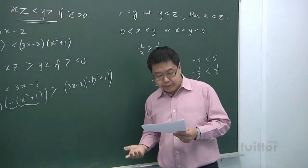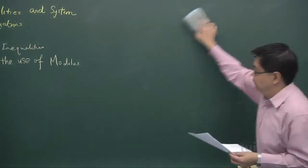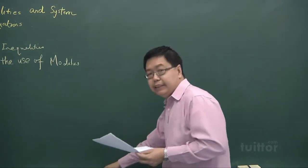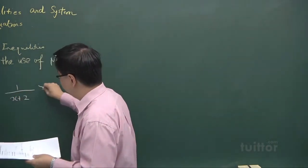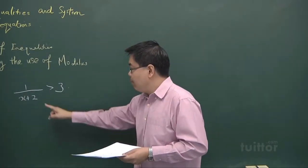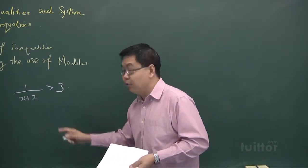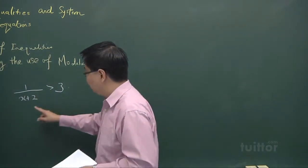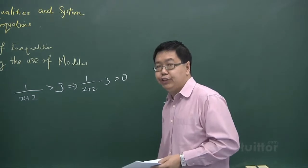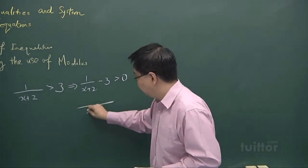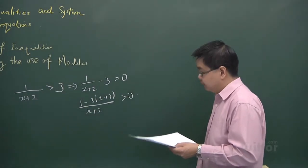Now we'll go through four examples on solving inequalities. In the first example, we need to solve 1 over (x plus 2) greater than 3. We do not multiply both sides by (x plus 2) because we are not certain whether it is always positive. Instead, we subtract 3 from both sides — the inequality sign will not change — and combine using LCM to get a single fraction greater than 0.